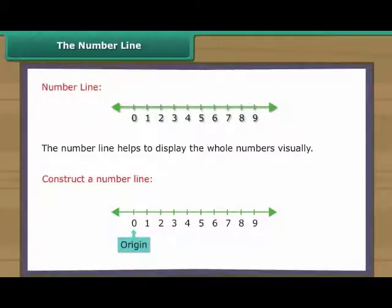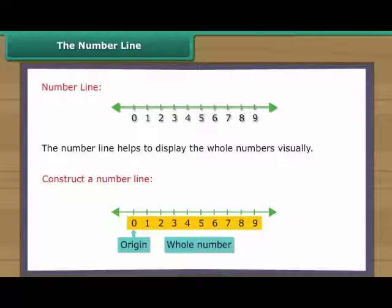We then choose some convenient length and moving to the right, mark off consecutive intervals, or parts, along the line starting at 0. We label each new interval end point with the next whole number.